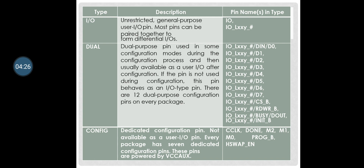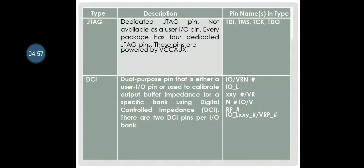The next pins are: CLK, DONE, M2, M1, M0, PROG_B, and HSWAP_EN. These are dedicated configuration pins, not available as user input/output pins. Every package has 7 dedicated configuration pins, and these pins are powered by VCCAUX. There are also 4 GTAC pins — dedicated GTAC pins not available as user input/output pins. Every package has 4 dedicated GTAC pins, also powered by VCCAUX.